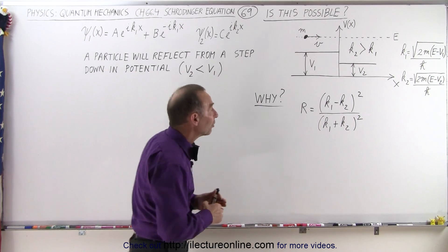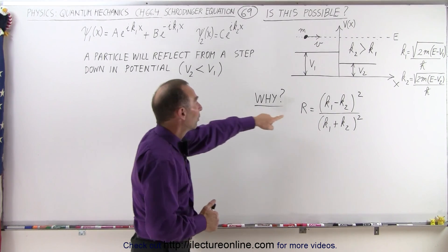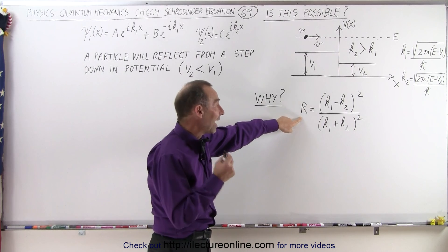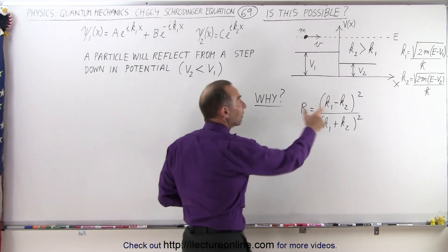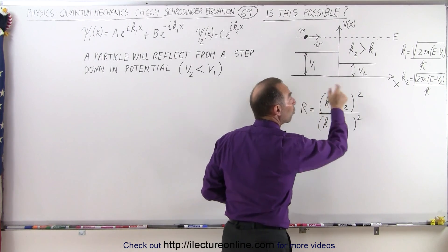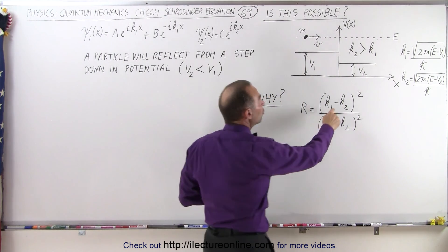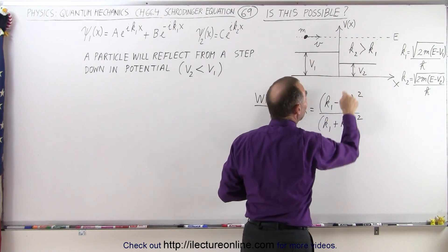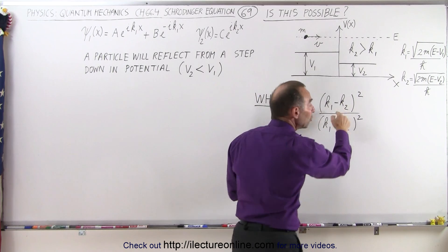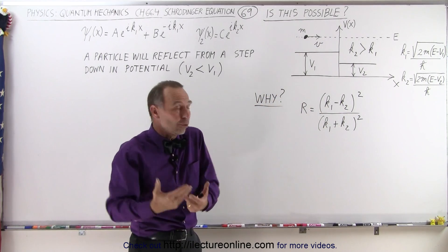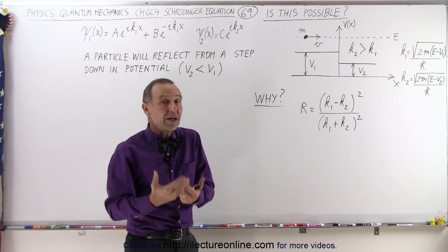Well, the reason why that is possible is that the coefficient of reflection is actually a function of the difference in the wave numbers squared. So even if k2 is greater than k1, so that k1 minus k2 is a negative number, since the numerator is squared, that makes it positive again.